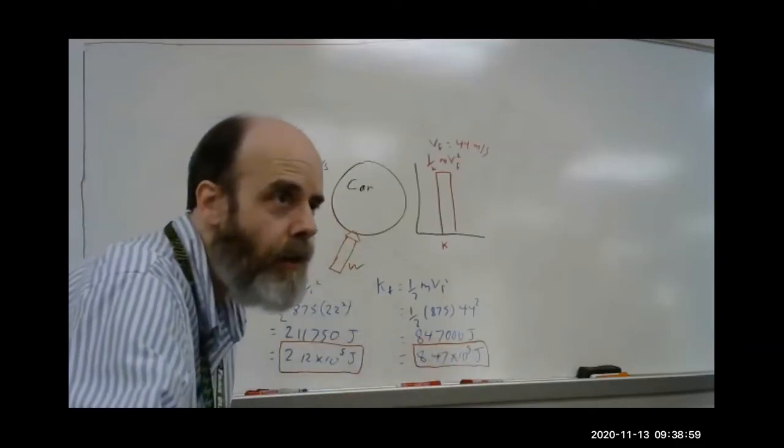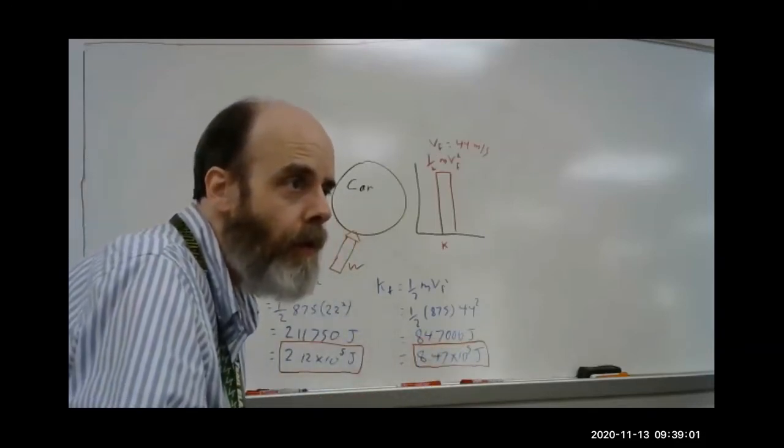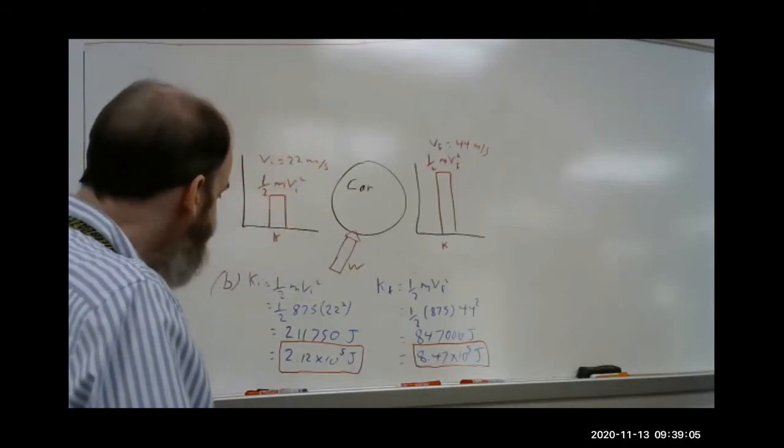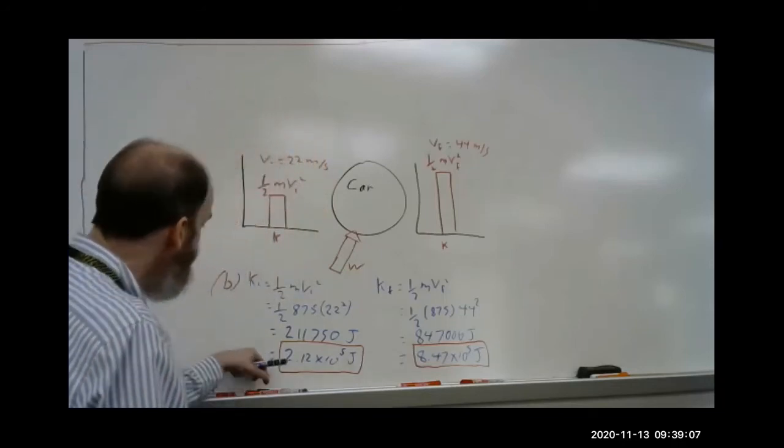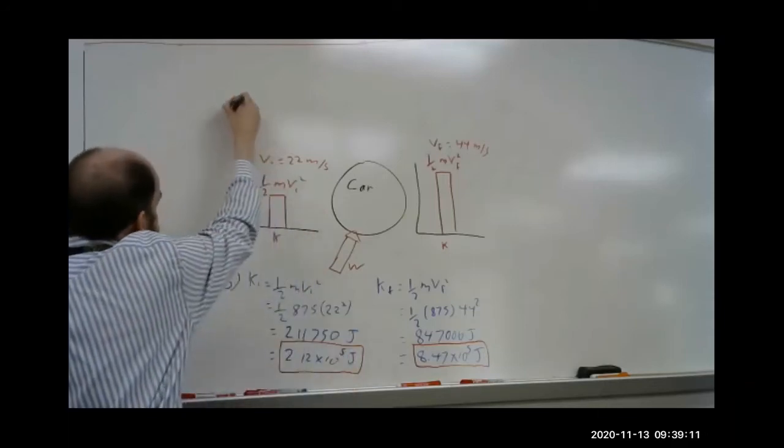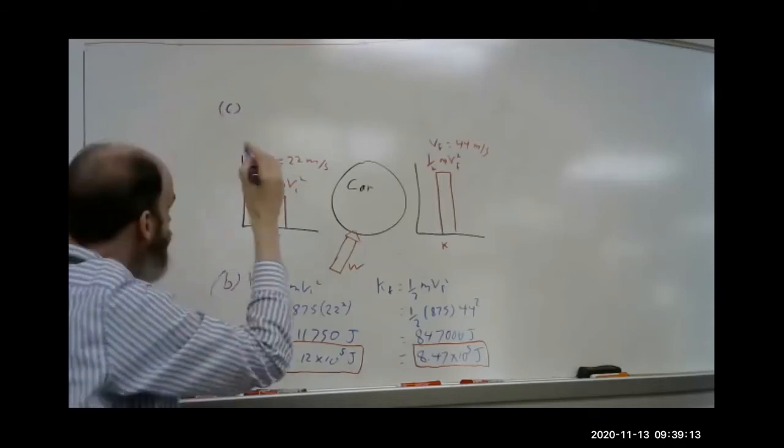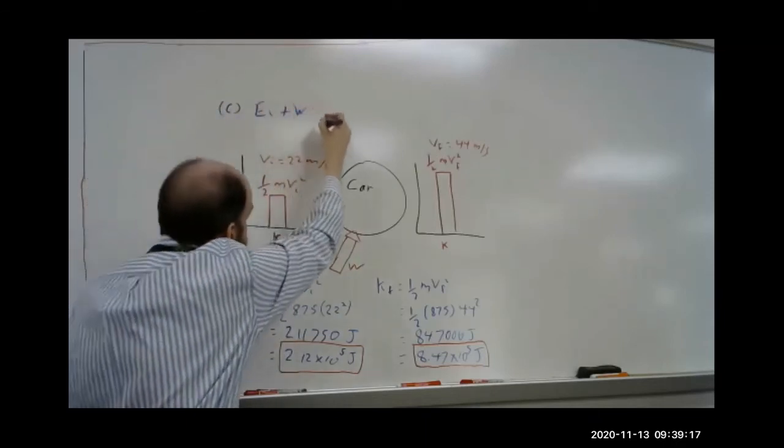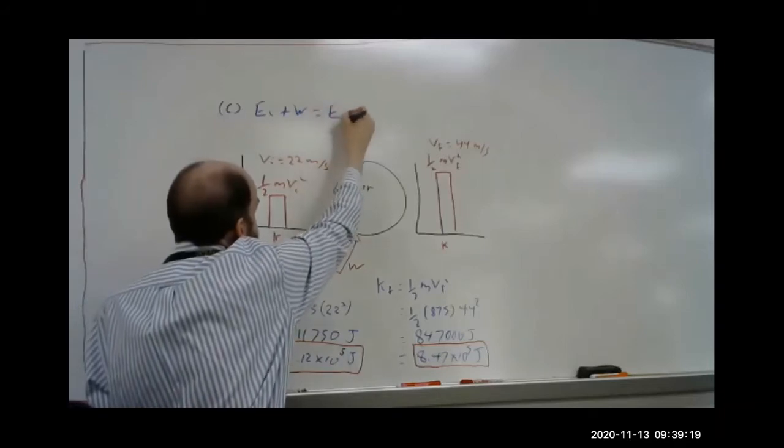Now let's look at part C. Use the work energy theorem to determine the amount of work. So let's do that. Part C. So E initial plus work equals E final.